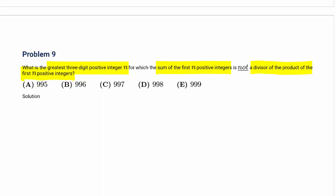So what is the greatest three-digit positive integer n for which the sum of the first n positive integers is not a divisor of the product of the first n positive integers?